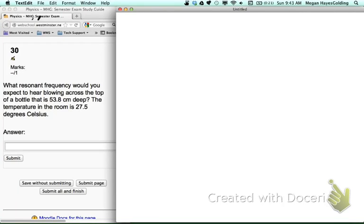Number 30. What resonant frequency would you expect to hear by blowing across the top of a bottle that is 53.8 centimeters deep? The temperature in the room is 27.5 degrees Celsius.